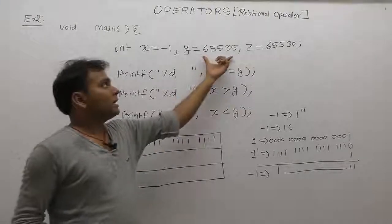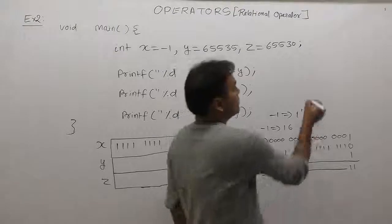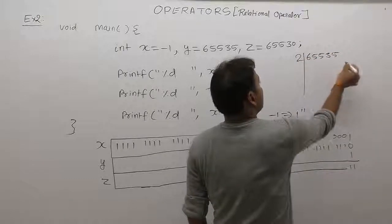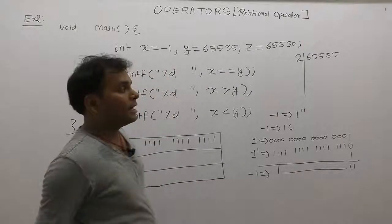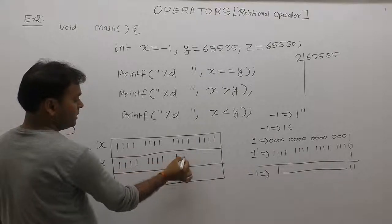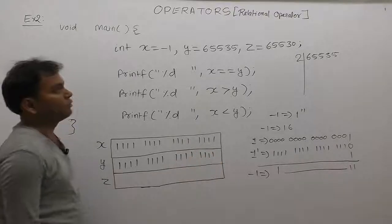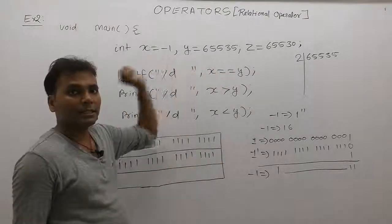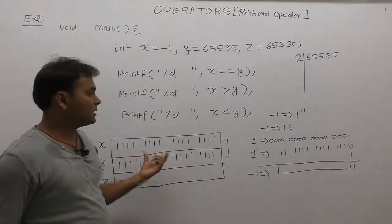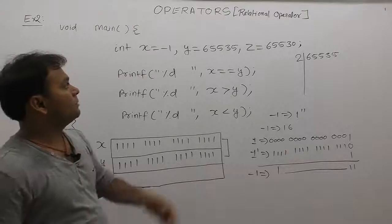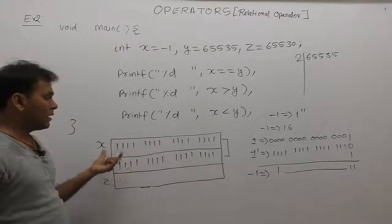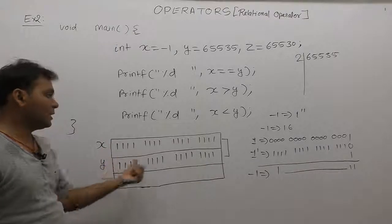For y, the value assigned is 65,535. If you convert 65,535 to binary, dividing by two repeatedly, you get all 16 bits as one — 16 times one. Therefore, minus one and 65,535 both have exactly the same binary number — the same binary representation. Logically, both have the same binary representation, so their meanings are also the same. However, their physical representations are different. But operations are performed based on the data available inside memory, and x and y have exactly the same bits in memory.